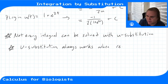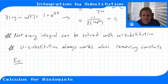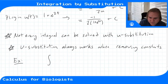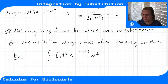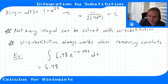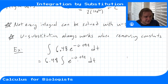By 'removing constants' I mean a situation where you'd know the anti-derivative if only a constant weren't sitting inside the function. For example, the integral of 6.48 e to the negative 0.09t dt. I'm not talking about the 6.48 out front — we can just pull that out using the constant product rule. I'm talking about the negative 0.09 sitting inside the exponent.